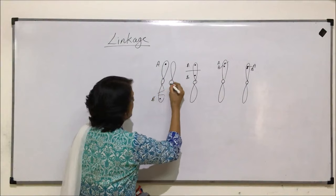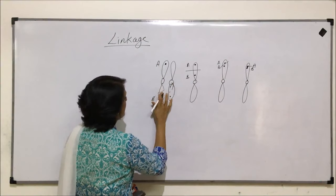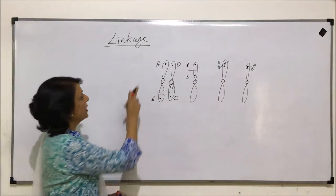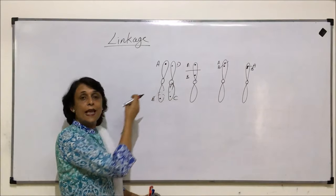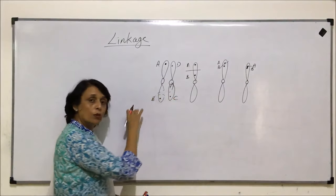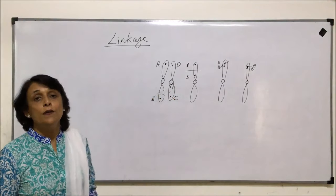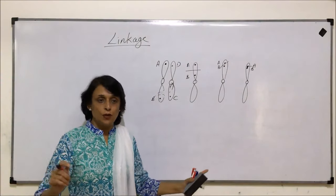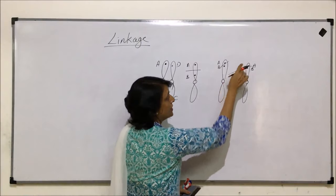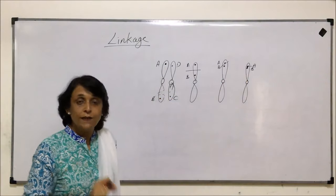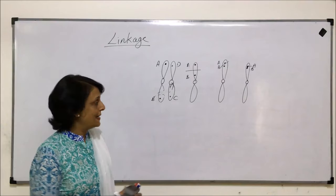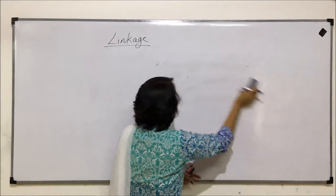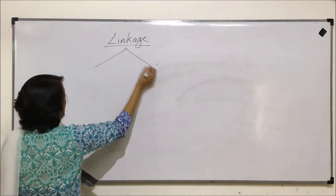If we plot this — say gene C is at one end and gene T at the other — the chances of recombination of A and C are high because every time crossing over takes place, these two will separate, so recombination frequency is more when genes are located at extremes. If the genes are located very closely, then the chances of recombination are less. Depending on this, linkages are divided into two categories: complete linkage and incomplete linkage.